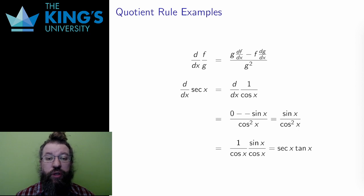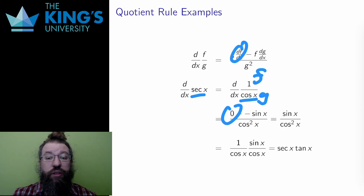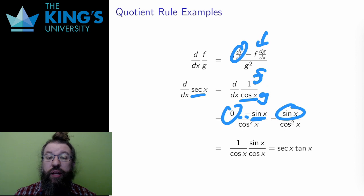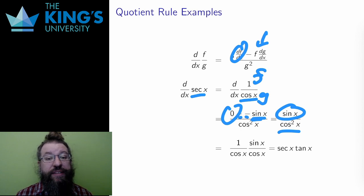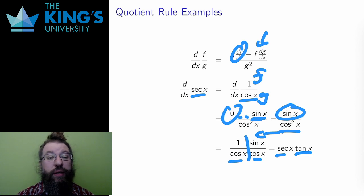One more trig example to finish. Say I want to differentiate secant. Secant is one over cosine. This is a quotient with f equals one and g equals cosine. In the first part, I have g times the derivative of f, but the derivative of one is zero, so the first term is zero. Then I subtract f times the derivative of g. f is one, and the derivative of cosine is negative sine, and the negatives cancel, so the numerator is just the sine function. The denominator is cosine squared. I can split up the denominator to write this as one over cosine times sine over cosine. One over cosine is secant, and sine over cosine is tangent. So I can write this as secant times tangent — the rate of change of secant is measured by secant times tangent.